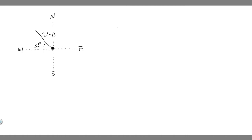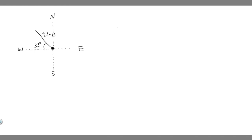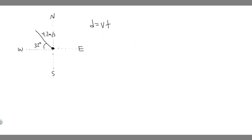We're trying to find how far west and how far north the sailboat travels. We use the formula distance equals velocity times time. The velocity is given as a vector — 4.2 meters per second at 32 degrees — so we need to find the velocity components in the x and y directions, then multiply by time to get the distance in each direction. Let's start with north.